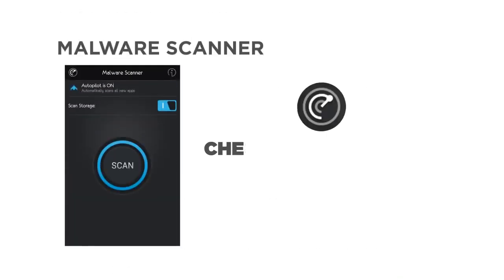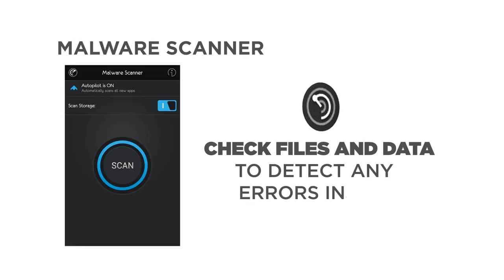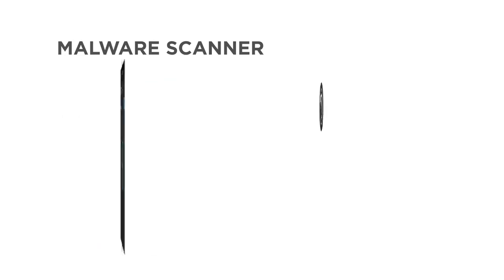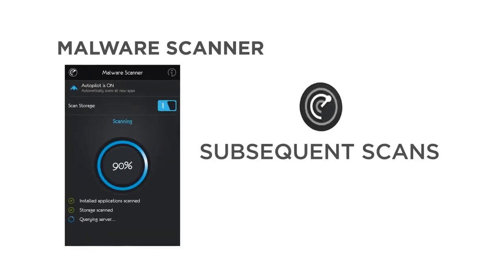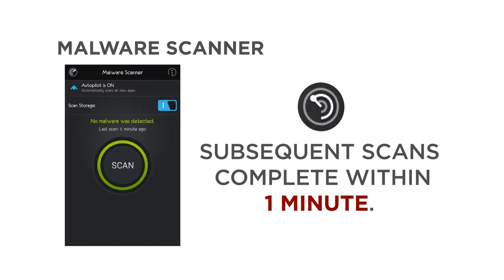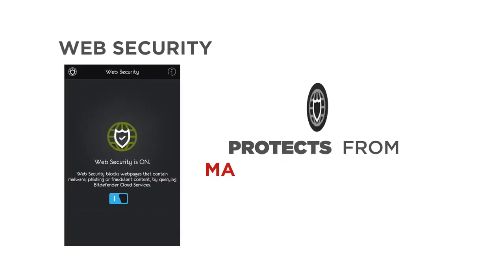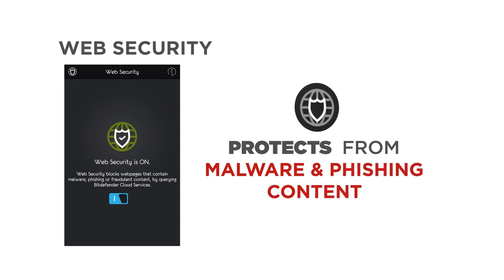The malware scanner helps to thoroughly check through your phone files and data to detect any errors inside. The scan will take a few minutes on the first scan, but subsequent scans will complete under one minute. Web security helps to protect the phone from web pages that contain malware and phishing content that could risk your data.